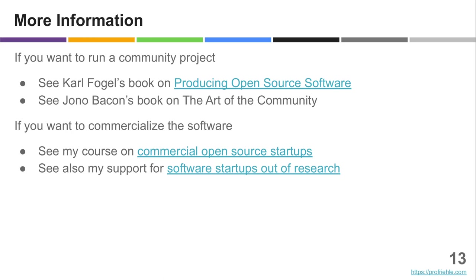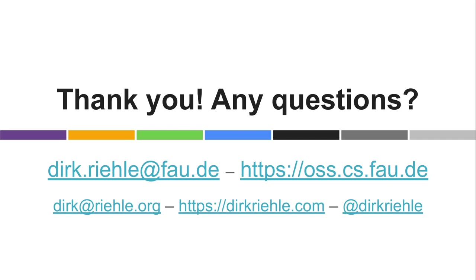With that, here are some final pointers. If you want to run a community open source project, there are good books to help you — most notably Fogel's 'Producing Open Source Software' and Bacon's 'The Art of Community.' If you want to commercialize your research software, I recommend my course on commercial open source software startups from research. I've worked in industry for a long time and have helped many startups along this path. Thank you very much for your time and attention, and I'll be happy to take some questions.